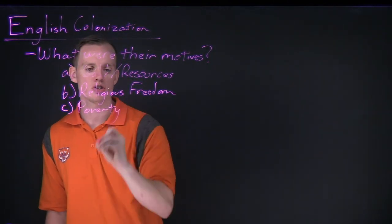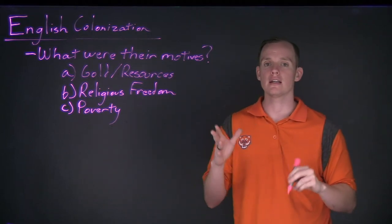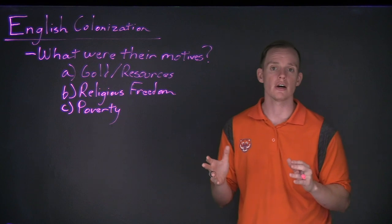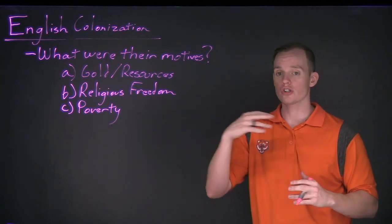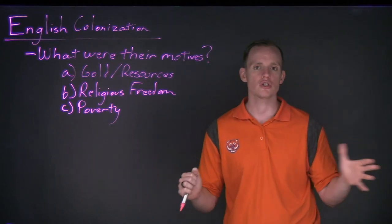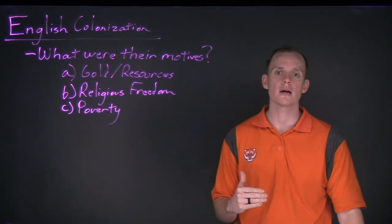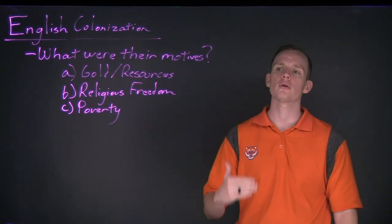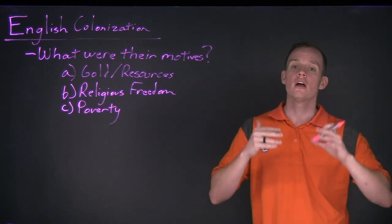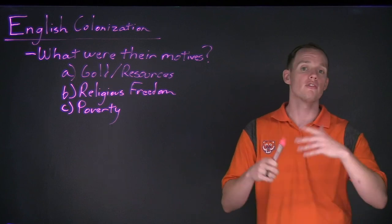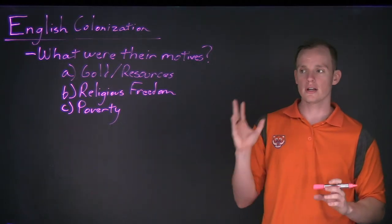Poverty was a major issue in England at this time. As an island nation with roughly five million people in the early 1600s, England was very limited in the amount of land it could distribute — not just to nobles and aristocracy but also to common people. This generated widespread poverty, with beggars in the streets of London. The King and Parliament were trying to resolve this issue, and many poverty-stricken individuals saw the American colonies as an opportunity for a second chance — to get their own land and eventually flourish.